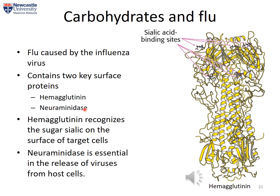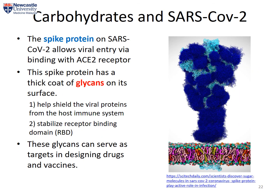Last but not least, the roles of sugars in infection by SARS-CoV-2: like influenza, SARS coronavirus has a surface spike protein that allows viral entry via the human ACE2 receptor. Studies discovered that the spike protein is a glycoprotein covered in a thick coat of sugars, shown in blue in this picture. These sugars serve two important functions: first, they help shield the viral proteins from the host immune system, and second, they help stabilize the receptor binding domain. The presence of these glycans is thought to increase the infectivity of SARS-CoV-2, and this structure can be used to design new drug targets and vaccines.